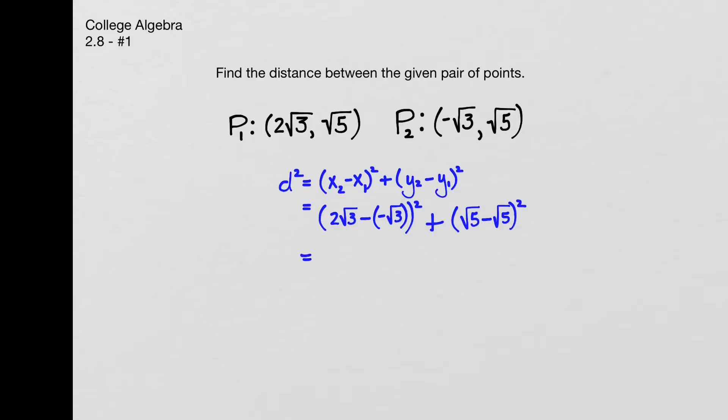So now I have 2 square root of 3 minus the negative square root of 3, which makes 2 square root of 3 plus the square root of 3, and we want that whole thing squared, plus 0. Just go ahead and make that 0. I can even just lose that part. And 2 square root of 3 plus the square root of 3 is 3 square roots of 3.